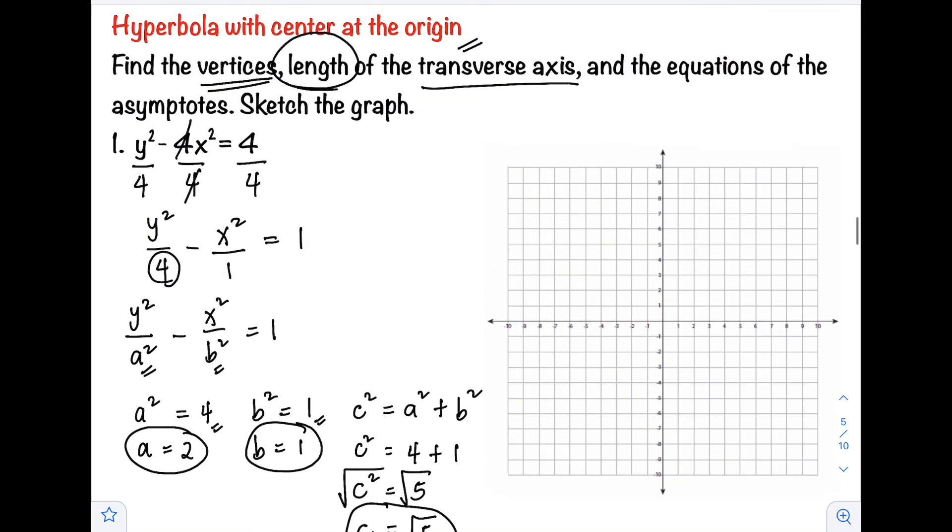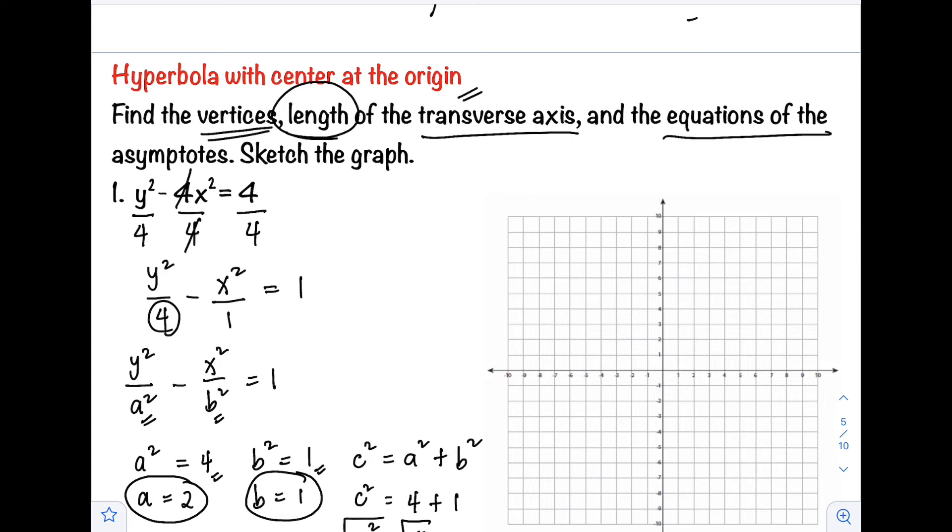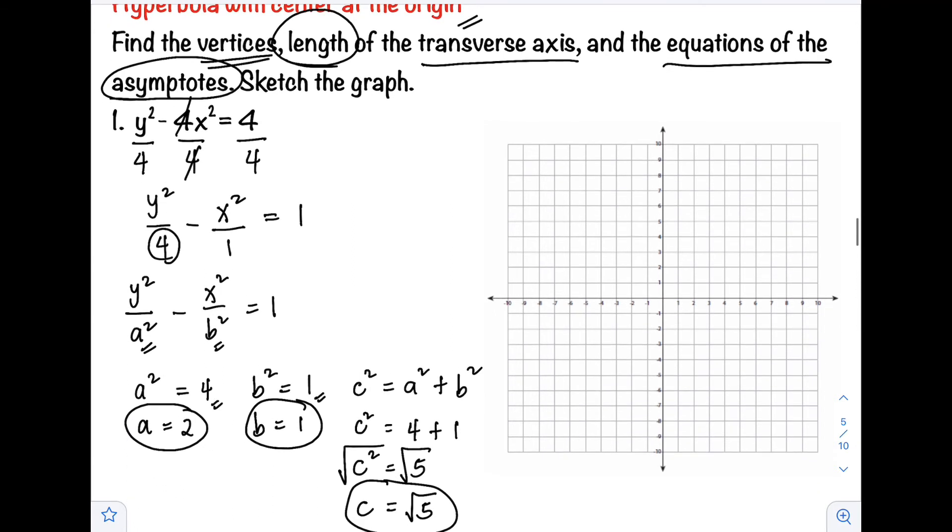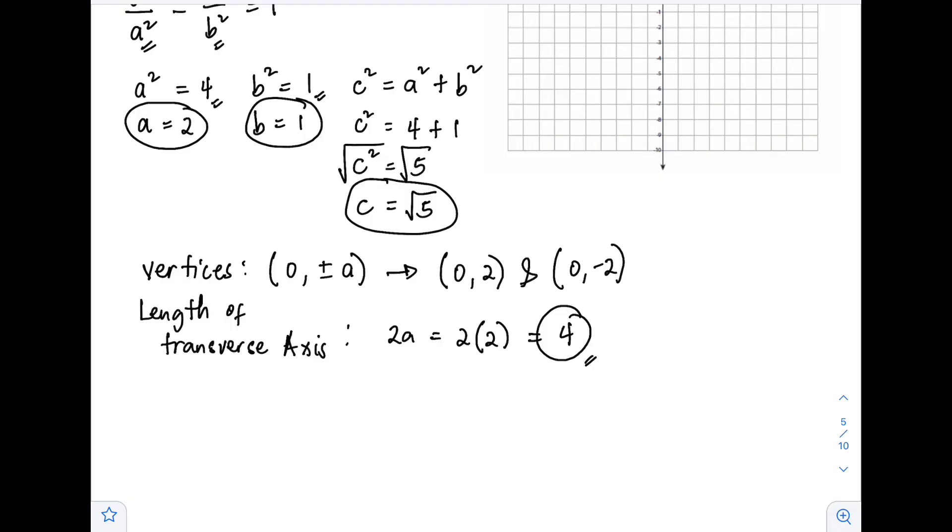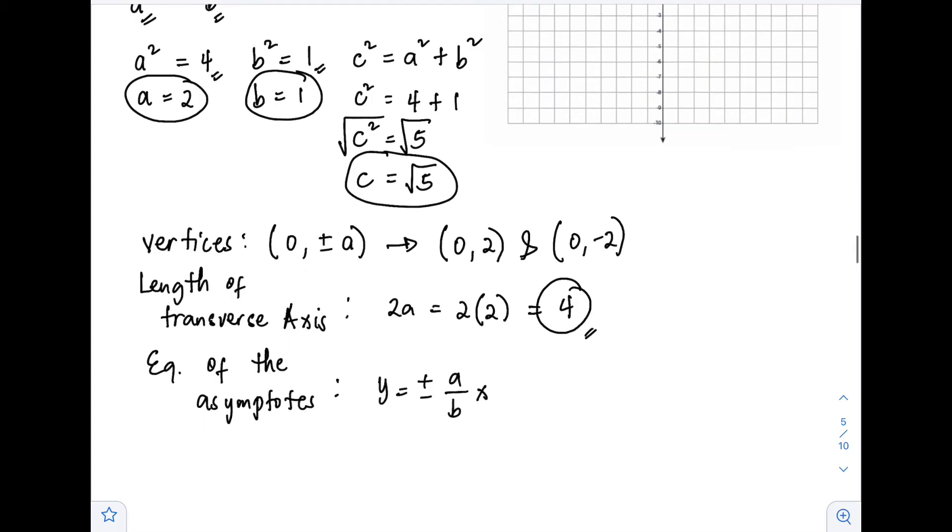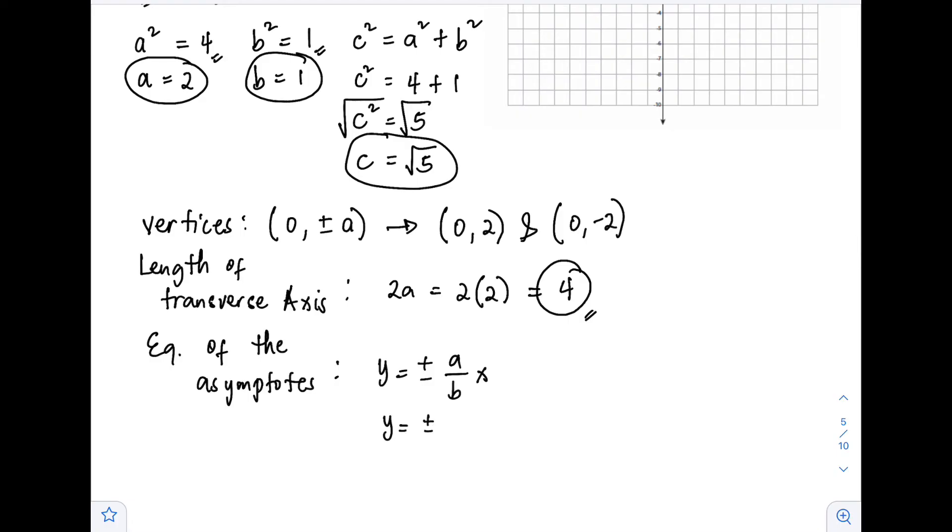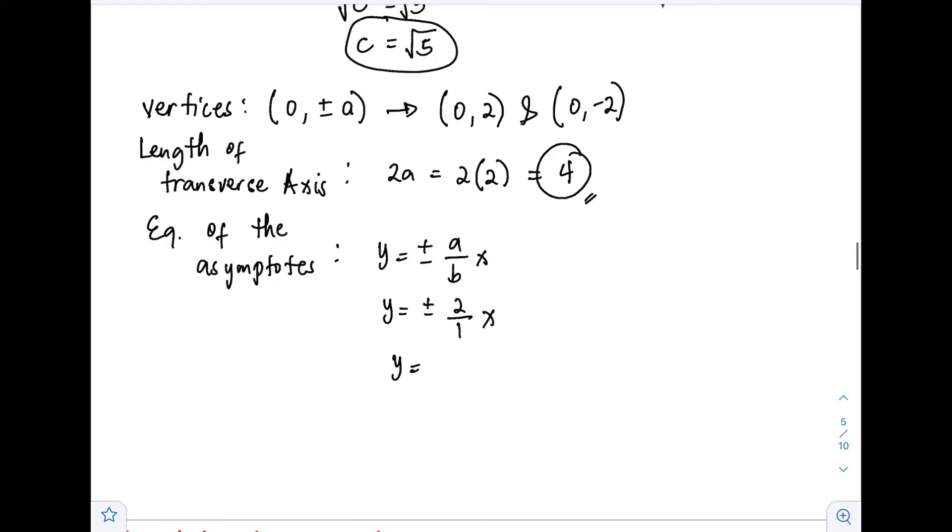Next are the equations of the asymptotes. If our hyperbola opens vertically, the equation of our asymptotes is y equals ±(a/b)x. Our a is equal to 2 and b is equal to 1. So the asymptotes are y equals 2x and y equals -2x.